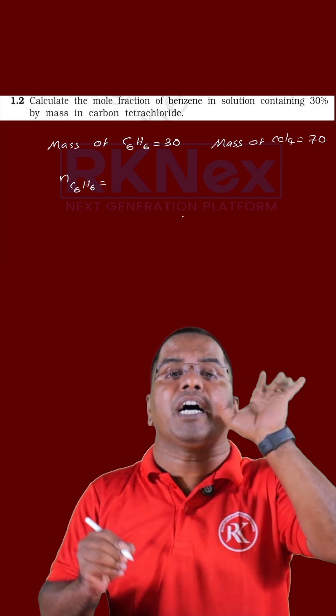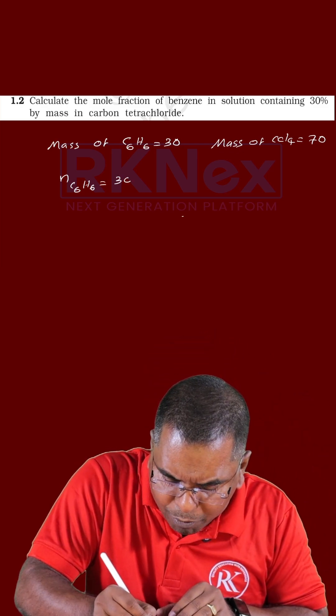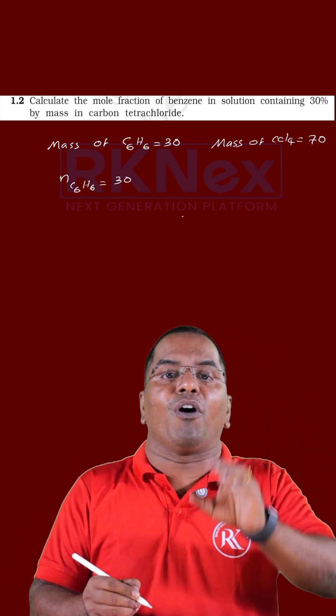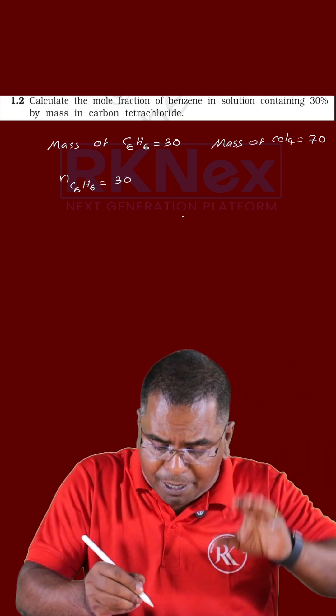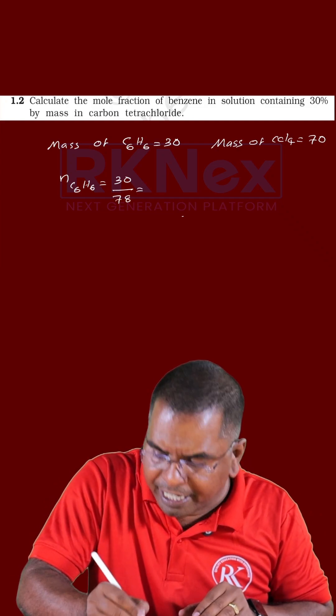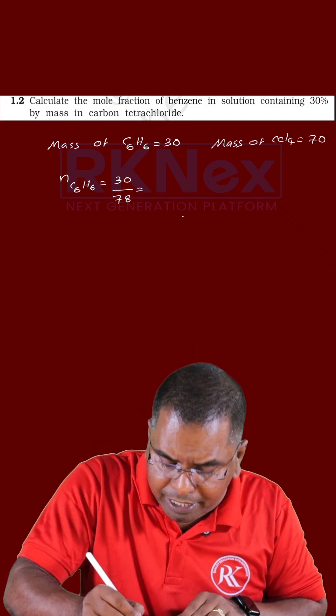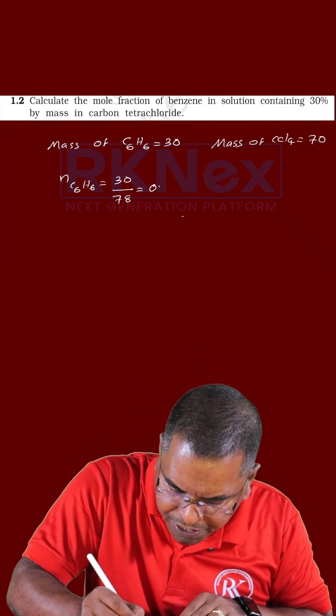Number of moles equals given mass divided by molar mass. Given mass is 13, molar mass of benzene is 78, giving 0.3846 moles of benzene.